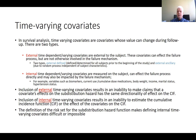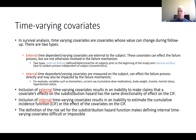External time-dependent covariates are external to the subject. These covariates can affect the failure process, but are not otherwise involved in the failure mechanism. There are two types: external-defined, which are defined for all subjects prior to the beginning of the study, and external-ancillary, which are due to a random process that is independent of subject characteristics.